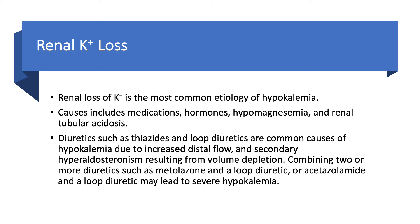Number four: renal potassium loss — by far the most important category. This includes medications, hormones, hypomagnesemia, and renal tubular acidosis, but by far the most common cause is diuretics. Thiazide diuretics and loop diuretics increase distal flow, which leads to hypokalemia, and they cause volume loss and secondary hyperaldosteronism. If you combine two diuretics — metolazone with a loop diuretic, or acetazolamide with a loop diuretic — you will get severe hypokalemia, so you must check potassium daily and replace it.